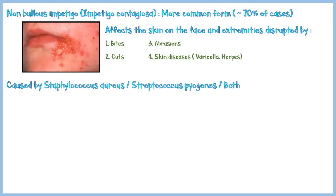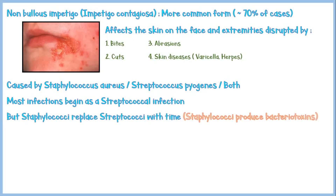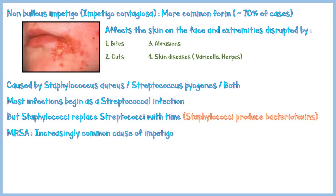Most infections begin as a streptococcal infection; however, Staphylococci replace Streptococci with time because Staphylococcus aureus produces bacteriotoxins that are toxic to Streptococci. Methicillin-resistant Staphylococcus aureus, or MRSA, is an increasingly common cause of impetigo, and these organisms are more frequently observed in non-bullous form than in bullous form.